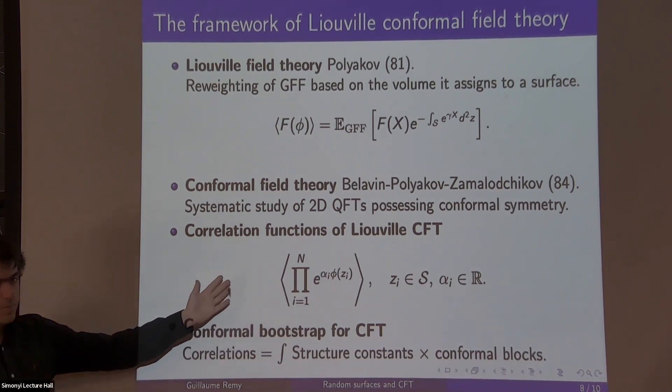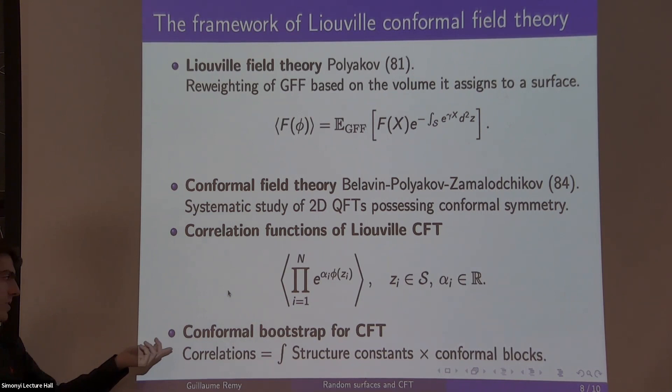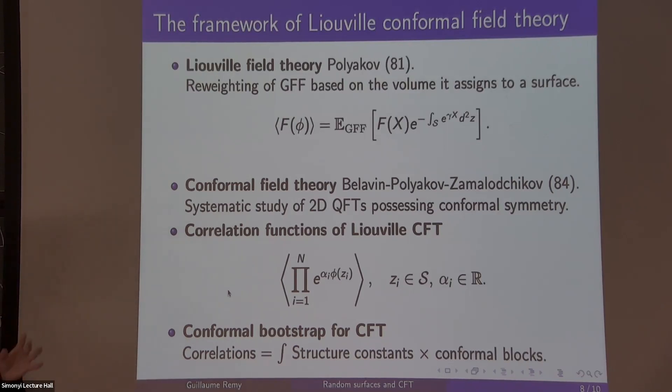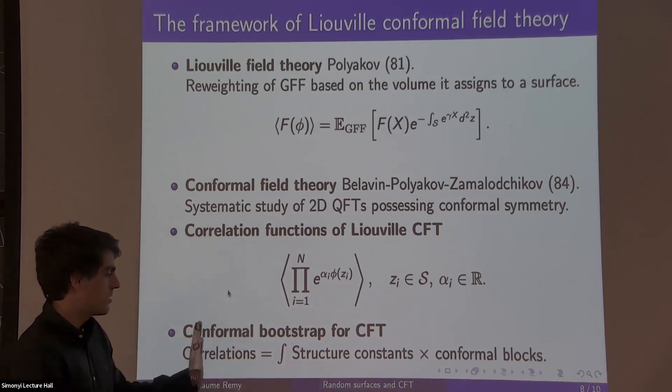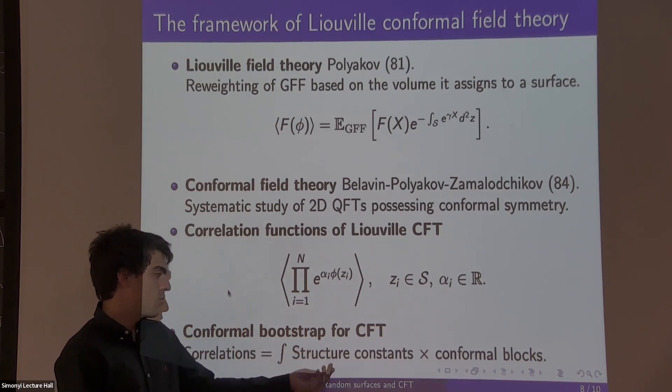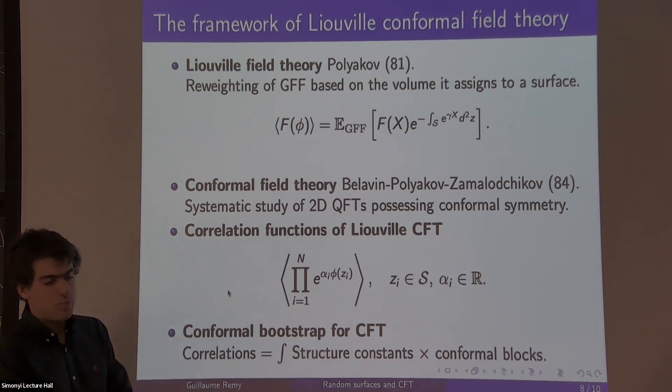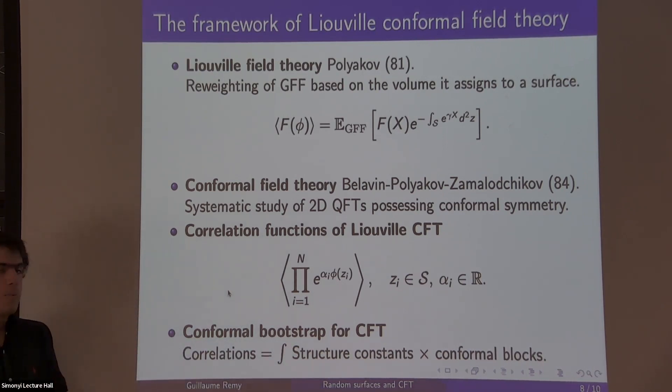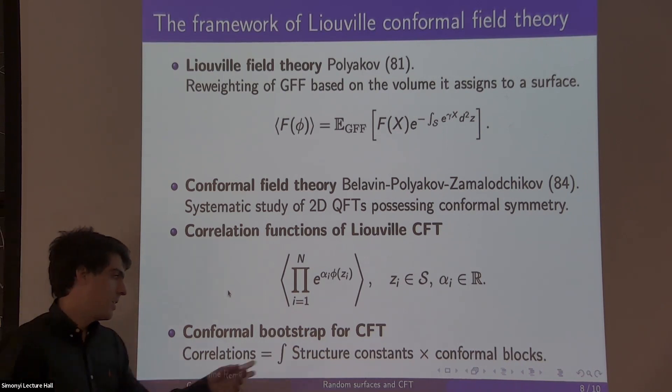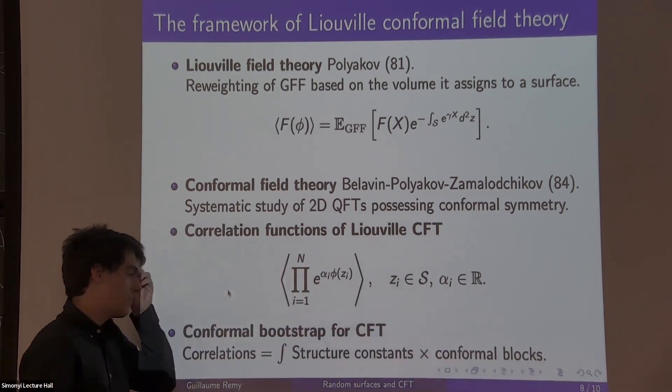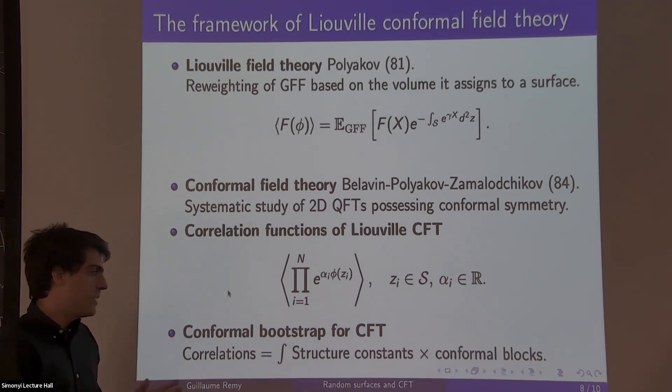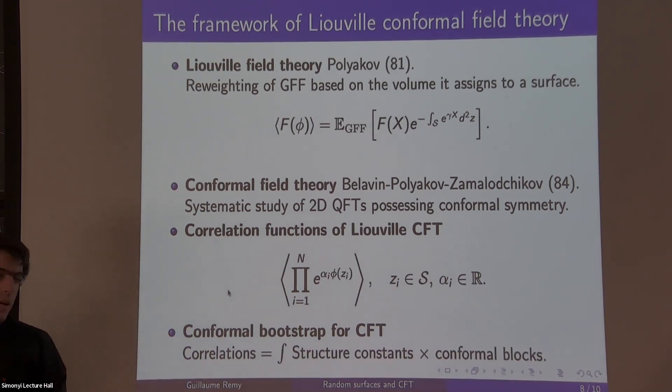In principle, if you know all these observables, all these functions, you've completely characterized your field. These are computable by a procedure called the conformal bootstrap. You compute any correlation on any genus surface, any Riemann surface, based on integration over structure constants, which are the most basic correlations like the three-point function on the sphere, and conformal blocks, which are specified by the conformal symmetries.